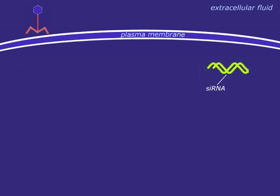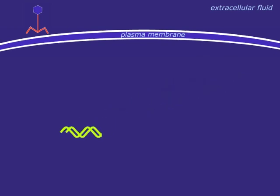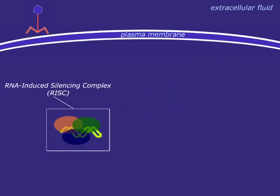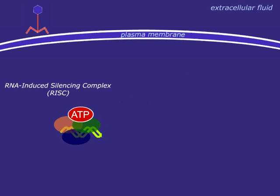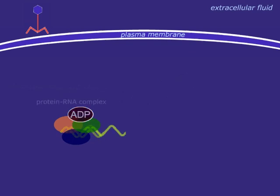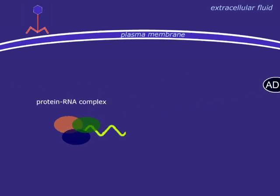This siRNA binds to cytoplasmic proteins and forms the RISC complex, which is the effector in this gene silencing process. RISC binds to its sequence-specific mRNA and degrades it into non-functional fragments,